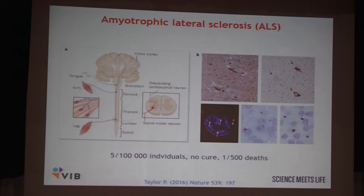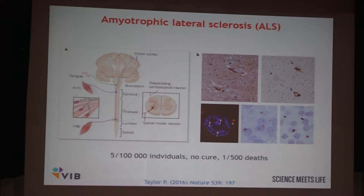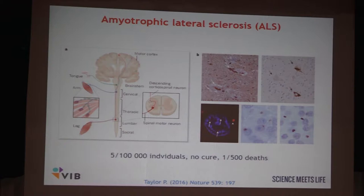My talk today will focus on a particular area, which is amyotrophic lateral sclerosis. I was contacted about a year ago by a group in Leuven. My place in Brussels belongs to the Flanders Institute of Biotechnology, VIB, and part of that is at Leuven University — that's why the collaboration was established. ALS is a motor neuron disease. Either upper or lower motor neurons accumulate aggregates, inclusions — maybe fibrous or non-fibrous amorphous material — which are very toxic to cells. Cells start dying, and because they no longer innervate different muscles, the muscles also degenerate and eventually the patient dies.